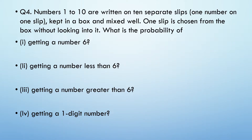This is the first part of today's video — if you haven't seen it, let's start. Question number 4: Numbers 1 to 10 are written on 10 separate slips and put into a box, mixed well. One slip is chosen from the box without looking. What is the probability of getting number 6?